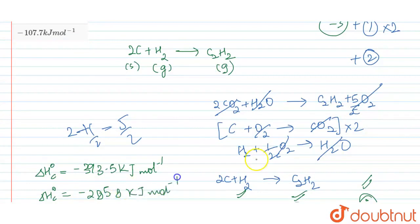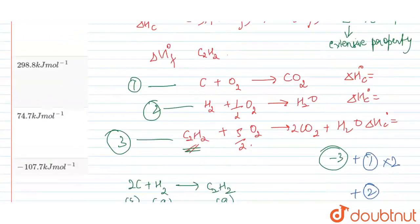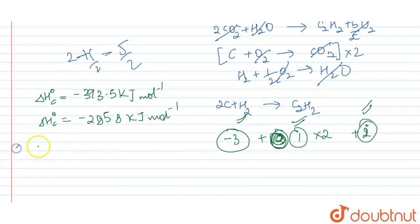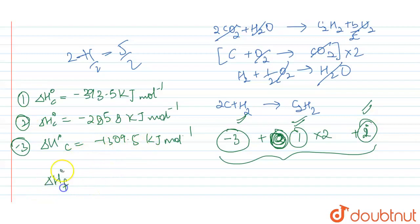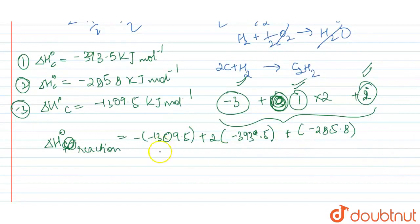For our target equation, the heat of reaction is: minus of -1309.5 plus 2 times -393.5 plus -285.8. This is our mathematical equation. Now we can solve.